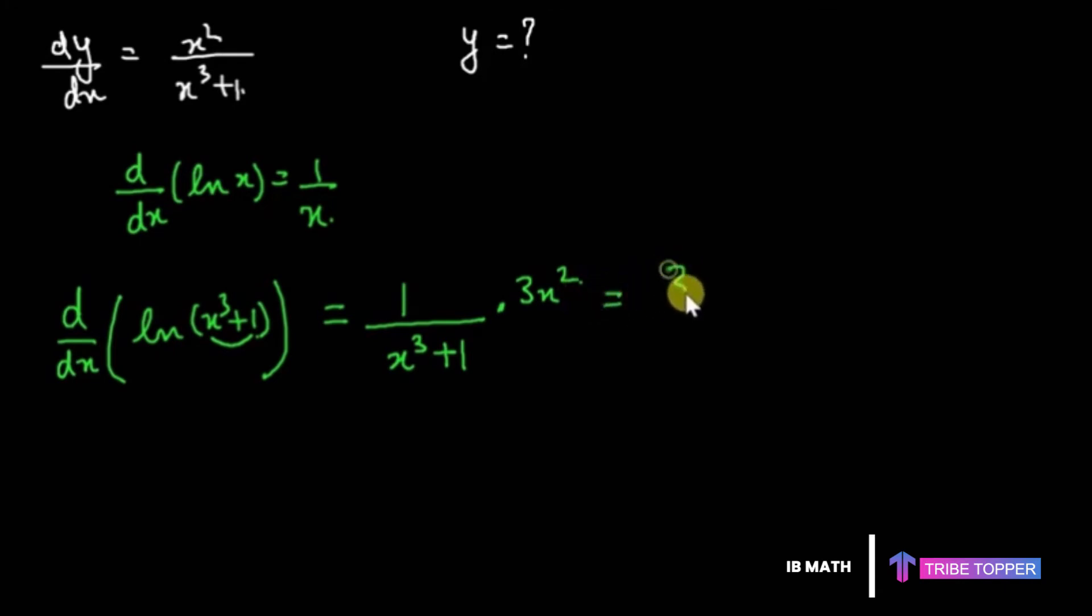So we have reached 3x squared upon x cubed plus 1, and our dy/dx is x squared over x cubed plus 1. This 3 is extra, I'm just going to take this 3 down here.